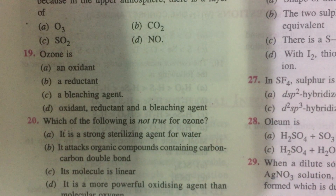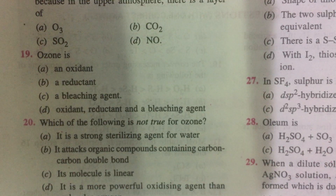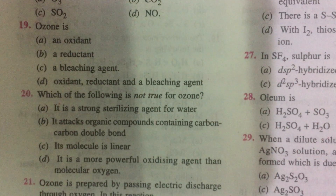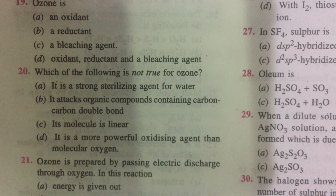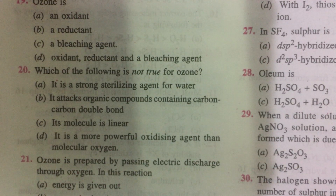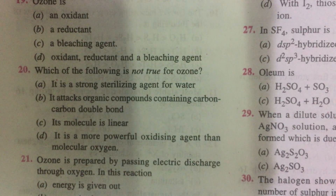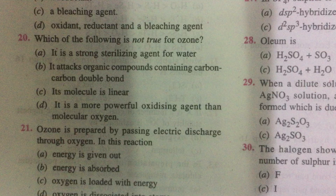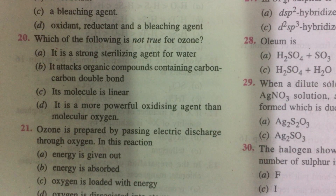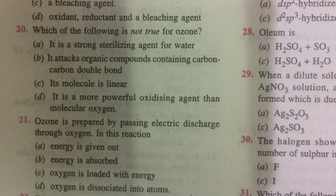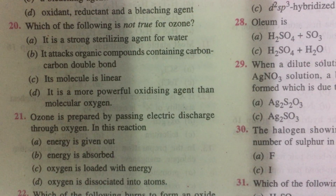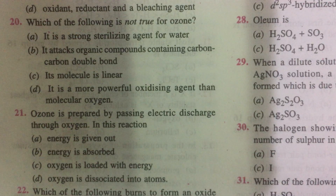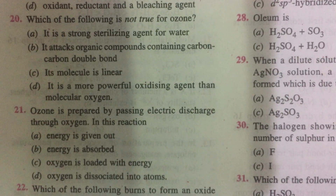Which of the following is not true for ozone? A is true, B is true. The statement that ozone's molecule is linear is incorrect — it is a bent molecule with the central oxygen sp2 hybridized. So C is the wrong statement. Ozone is prepared by passing silent electric discharge through oxygen using an ozonizer. Energy is absorbed, making this an endothermic process. The formation of ozone is thermodynamically not favored at any temperature: ΔH is positive and ΔS is also negative, so ozone formation is not spontaneous.